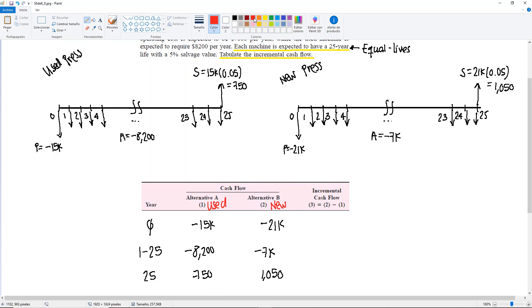Now let's get our incremental cash flow. In the last column, it's going to be column 2 minus column 1, but you're literally going to use the negative sign here. So if it's negative, it's going to be a double negative. Let's do the first one. Column 2, it's minus 21,000 minus minus 15,000. This will give us minus 6,000.